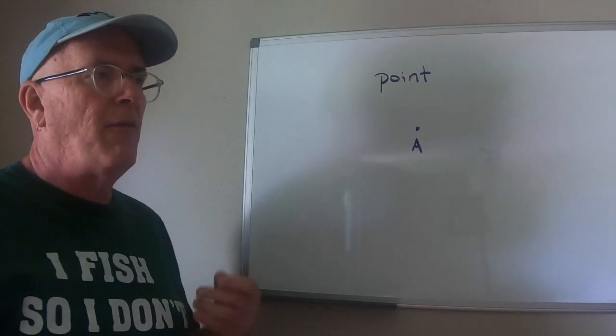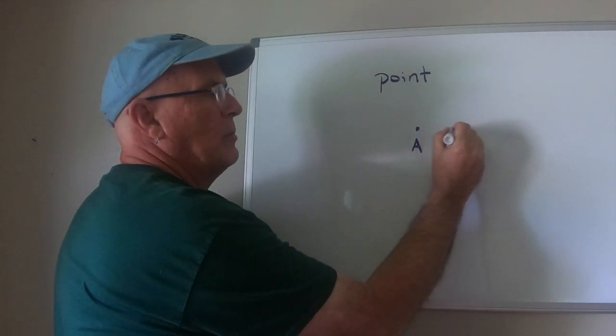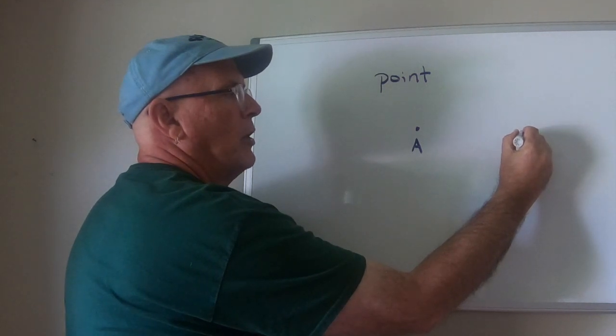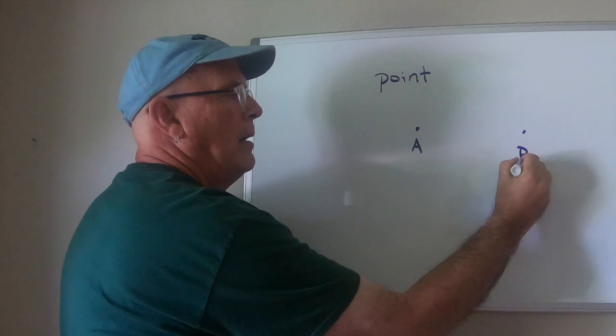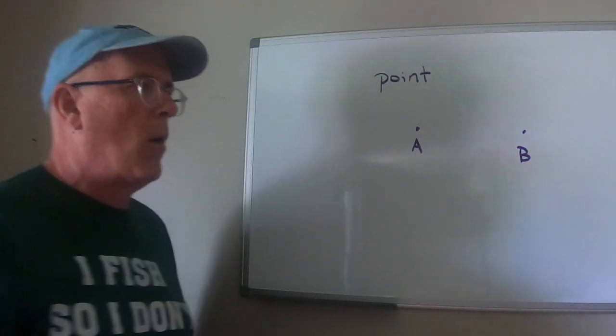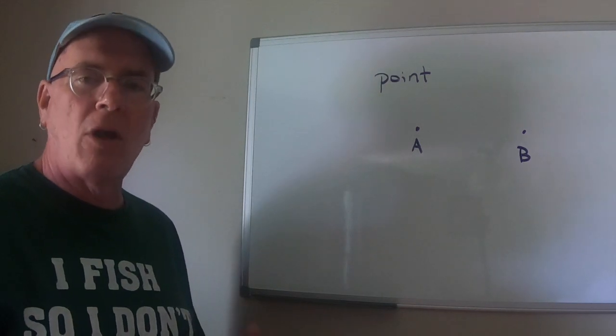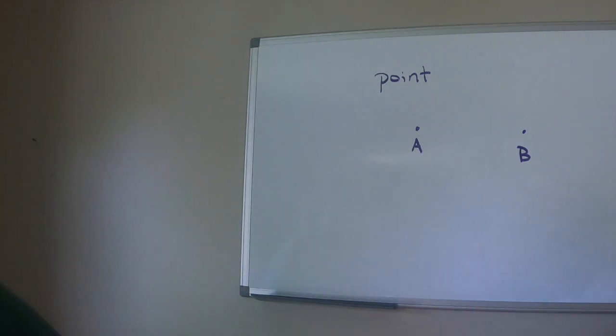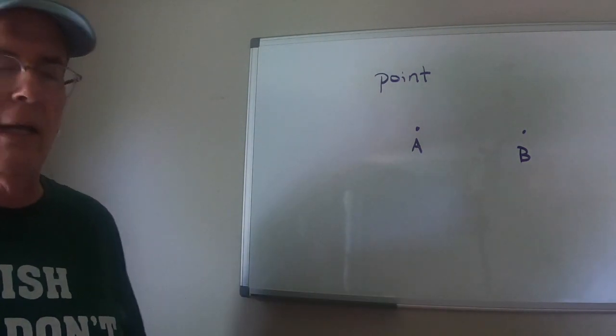Now if you think about a point as being a location, if you string a bunch of points together, it will move in a single direction. So I'll put another point over here and that is point B. Now a group of points that are all put together like this is called a line.